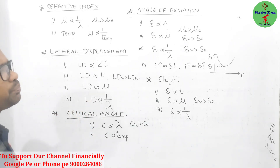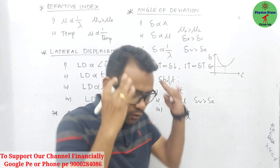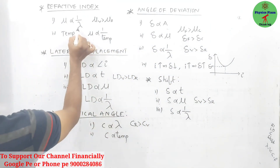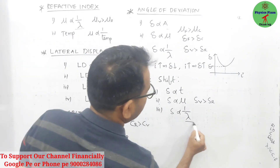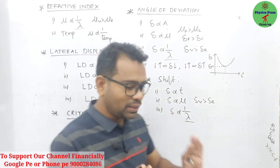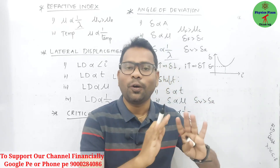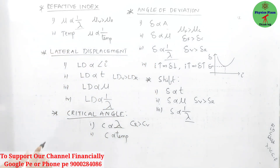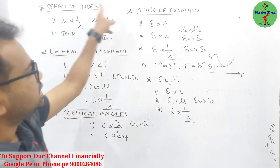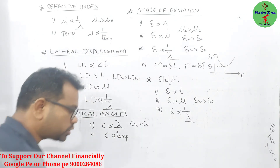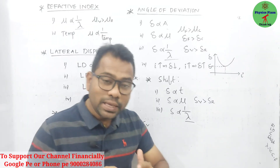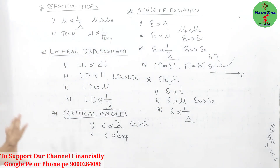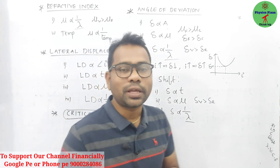One important point: if you're unsure about any of these five factors, remember that wavelength is a common factor in all cases. Except for critical angle, in all other cases wavelength is inversely proportional. Only in the case of critical angle is it directly proportional. This analysis helps you avoid confusion and score marks. Hope you've noted it neatly. Thank you and all the very best!